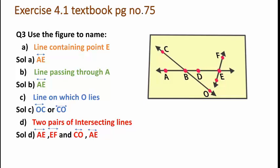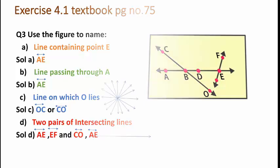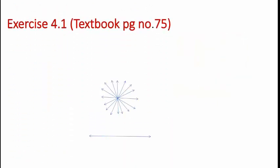For the second pair, look at the given figure carefully. You can find that line CO is intersected with line AE at point B. So the second pair of intersecting lines is line CO and line AE.